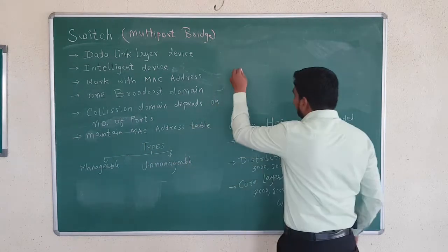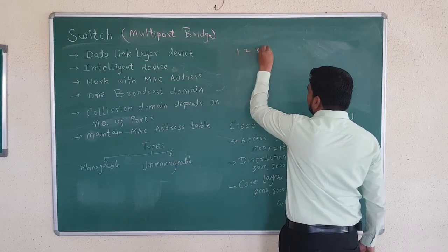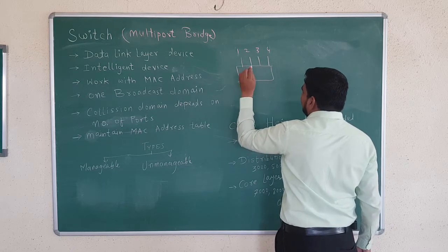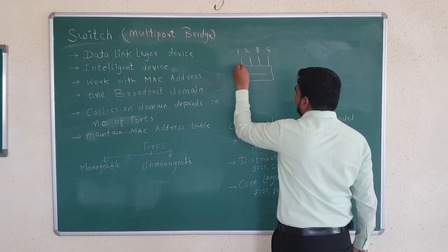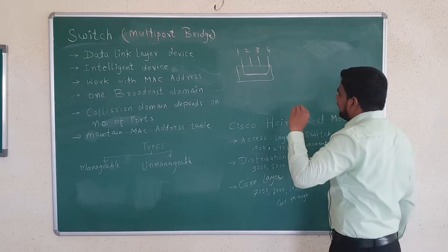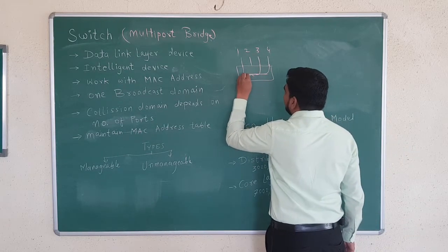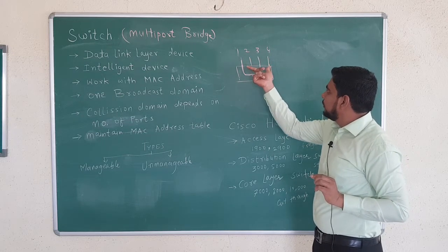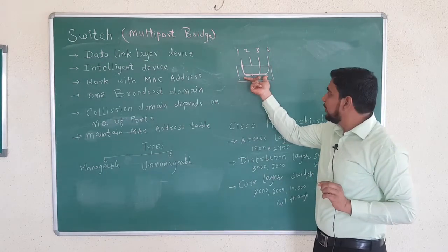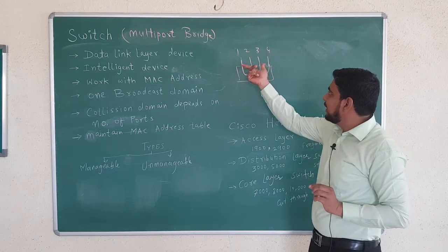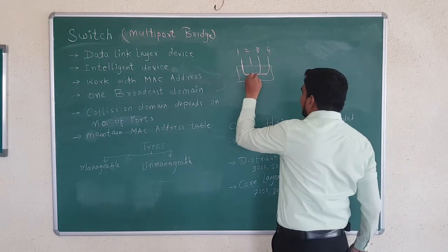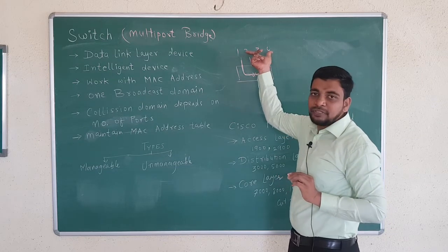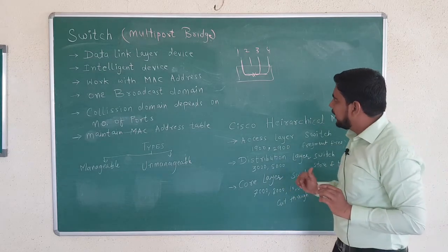Suppose 4 devices are connected with the hub. When one wants to communicate with device 4, this is the path. And when device 3 wants to communicate with device 1, this is the path. The path for communication for all devices is the same, which means there is a collision domain. The collision domain increases simultaneously — if information is transmitted between 1 and 4, there is collision; if it's between 3 and others, there is collision. The collision domain depends on the number of devices.